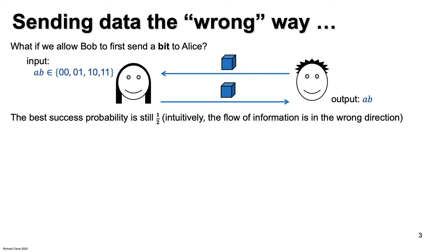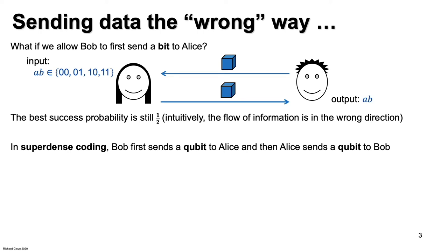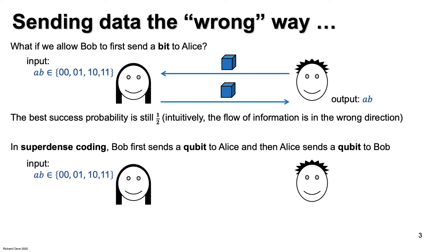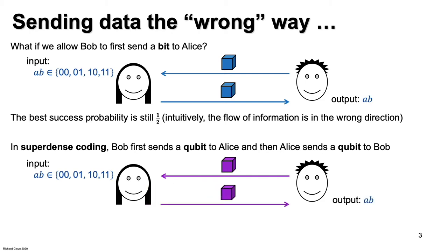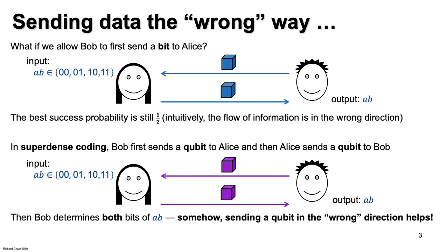In fact, if Bob sends a bit the wrong way and then Alice sends a qubit to Bob, even that does not help — the best possible success probability is still one-half. So it seems that messages sent in the wrong direction are of no use. In superdense coding, Bob first sends a qubit to Alice, and then Alice sends a qubit to Bob, and that actually makes a difference. Alice receives her bits, Bob sends a qubit to Alice, Alice sends a qubit to Bob, and then Bob can perfectly determine both bits A and B. Sending a bit in the wrong direction does not help, but somehow sending a qubit in the wrong direction does help.